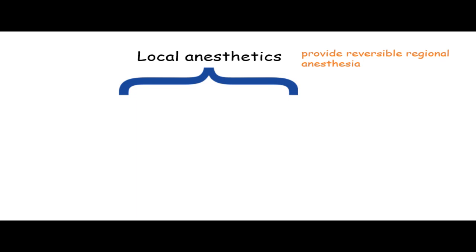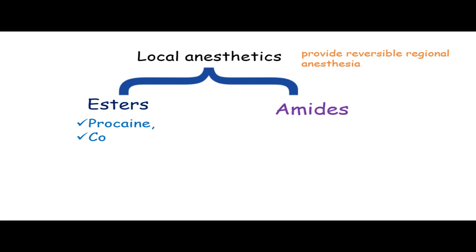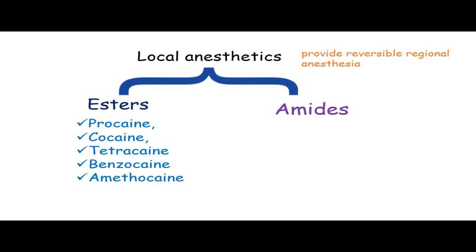There are two classes of local anesthetics: ester local anesthetics and amide local anesthetics. Ester local anesthetics consist of procaine, cocaine, tetracaine, benzocaine and amethocaine. On the other hand, amide local anesthetics consist of lignocaine, bupivacaine which has a trade name of marcaine, articaine and mepivacaine.